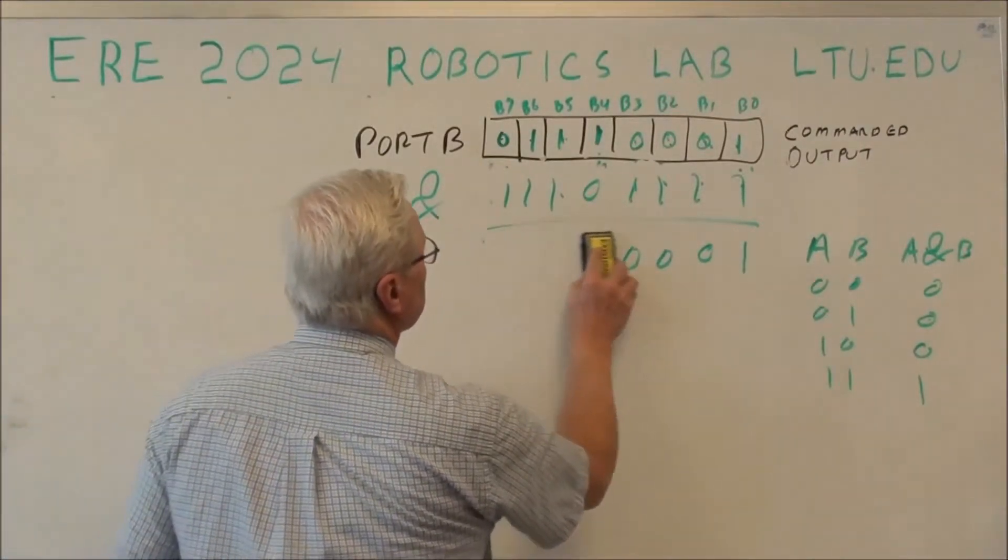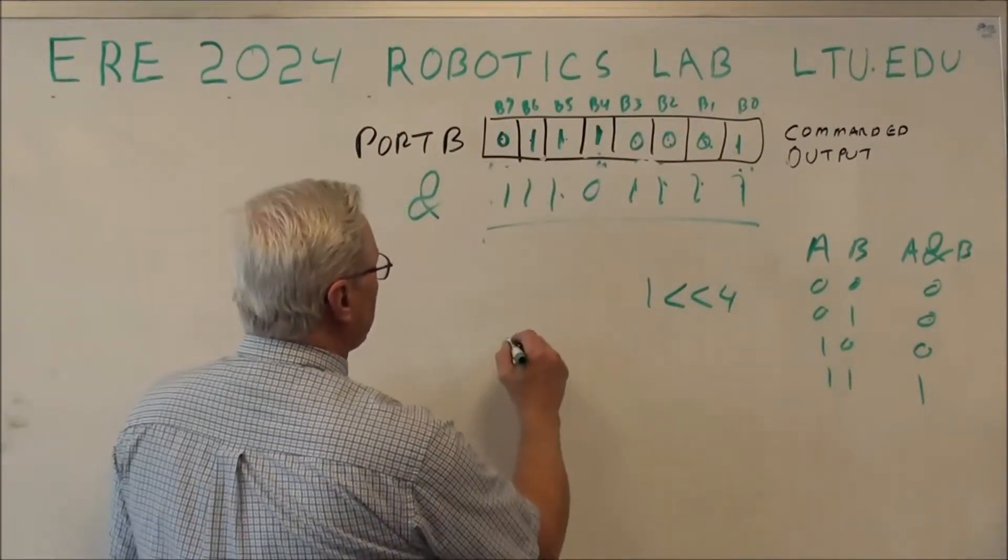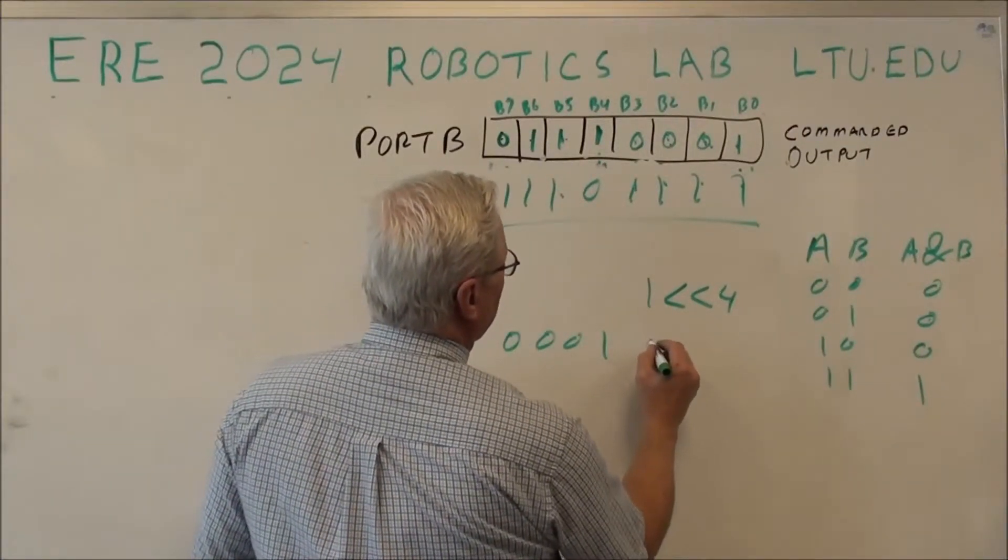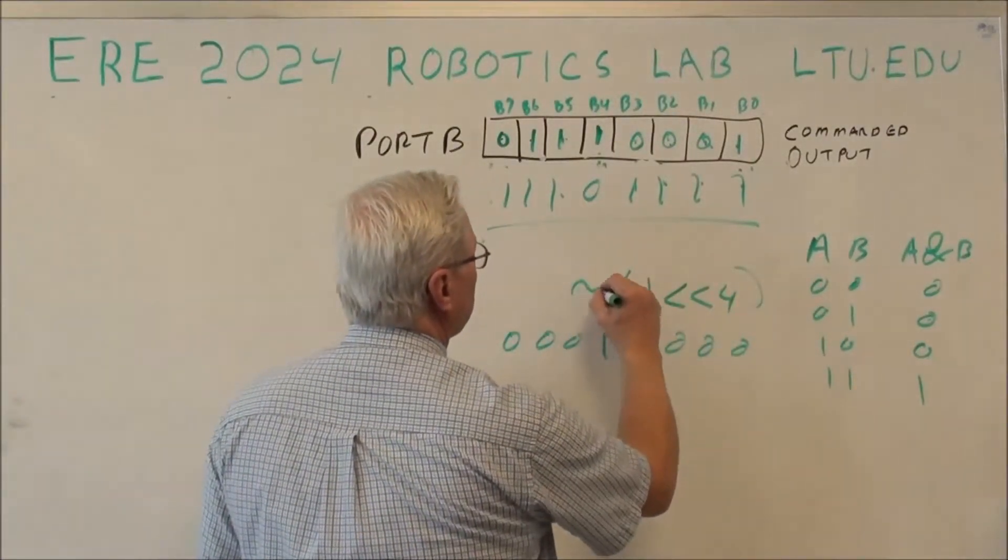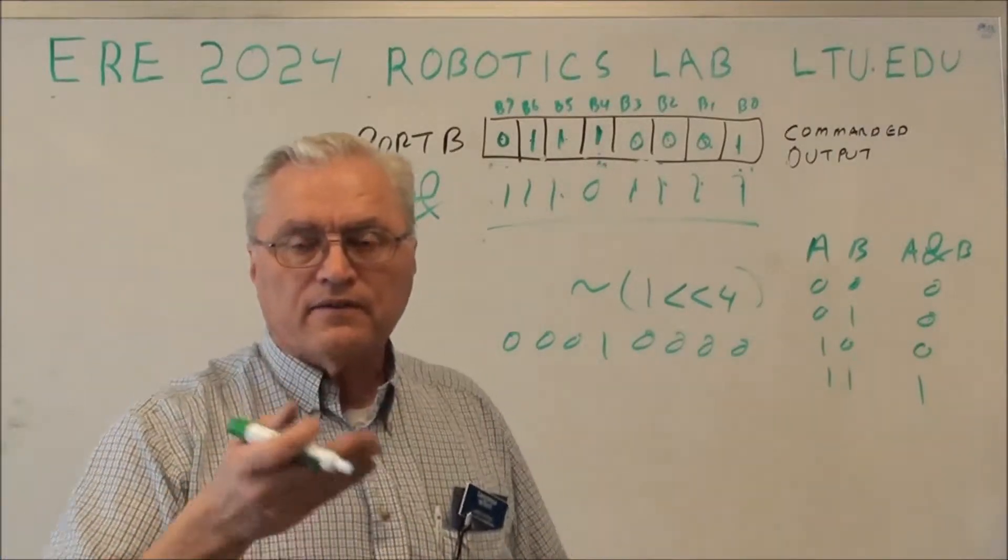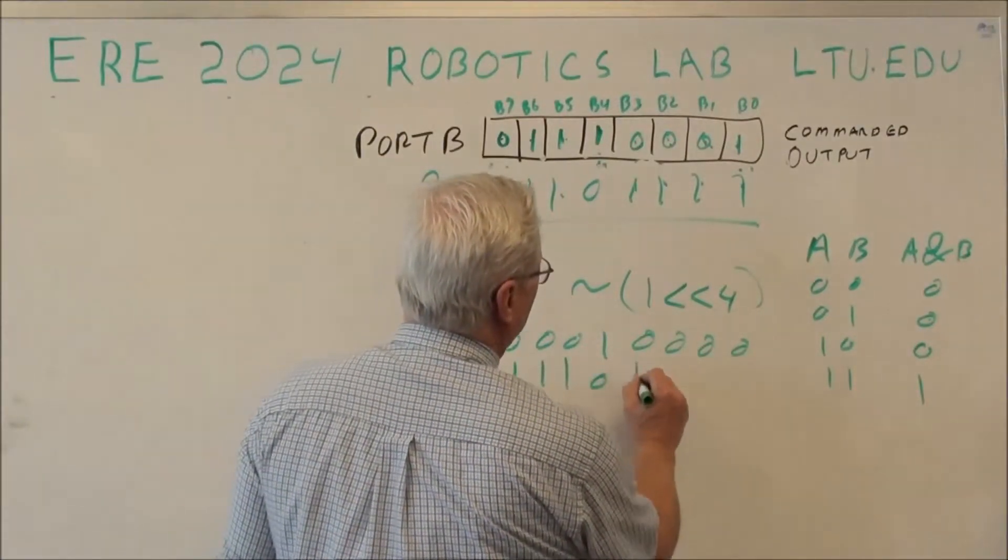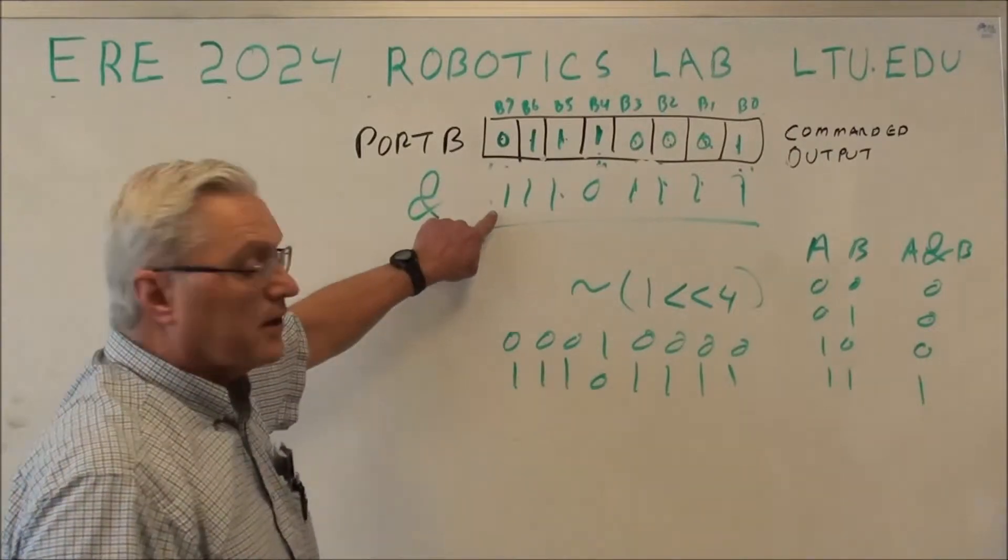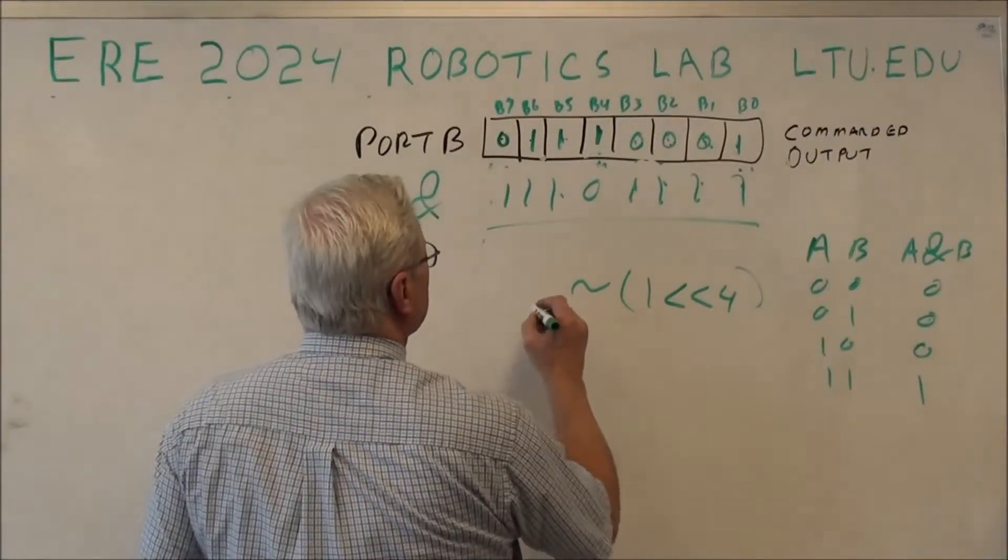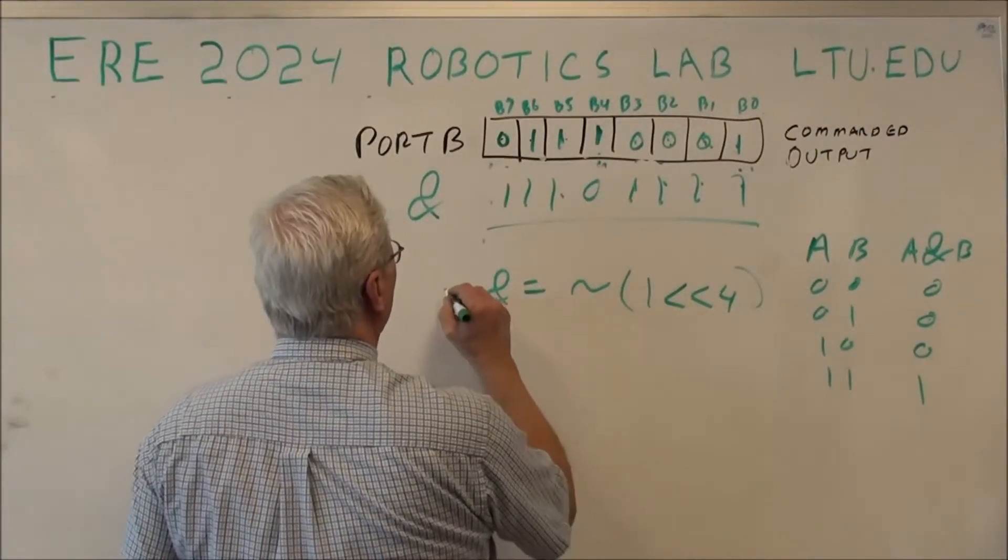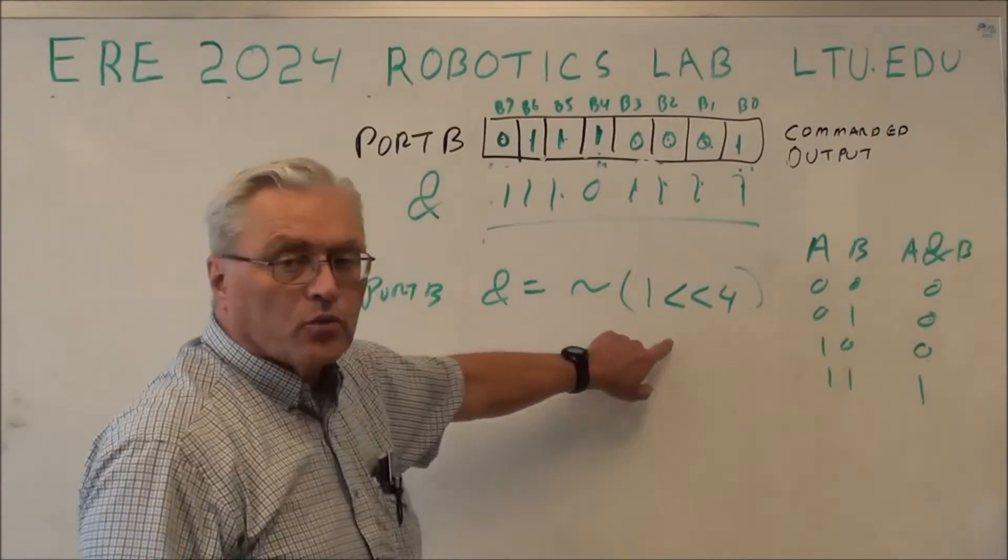What I can do, just like I did before, I can say 1 shifted to the left 4, that gives me 00010000. If I put a NOT in front of that, the NOT operator just flips every single bit, bit by bit. So that means this register becomes 11101111, which is exactly what I needed up here.